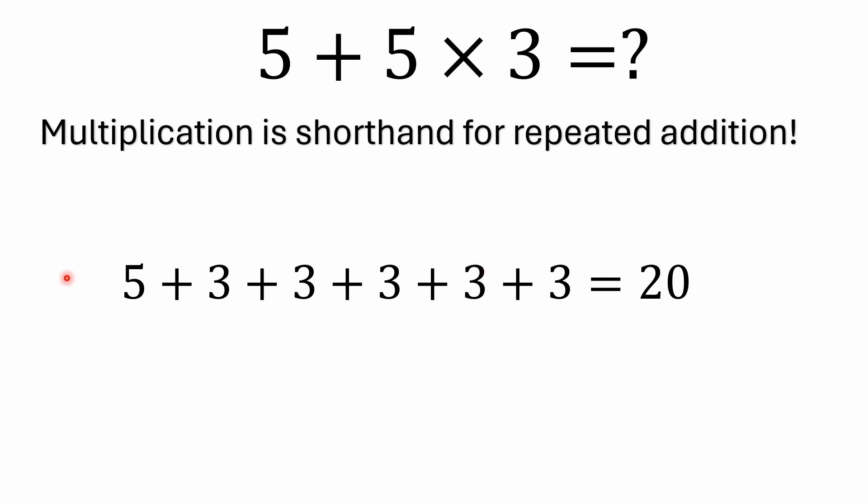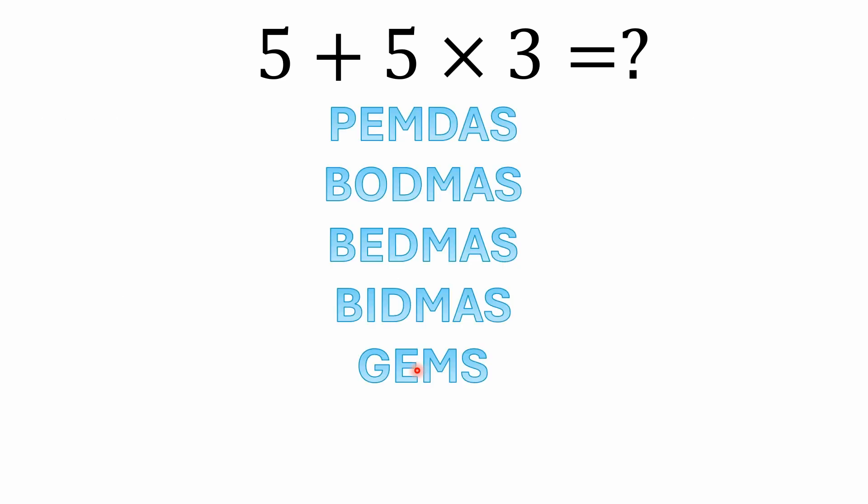So if you replace all the multiplication with equivalent addition, you're going to get the same answer of 20. This is why you've got to resolve the multiplication first. It's sure a lot easier to write 5 + 5 × 3 than it is to write 5 + 3 + 3 + 3 + 3. You wouldn't want to have to write stuff like that all day.